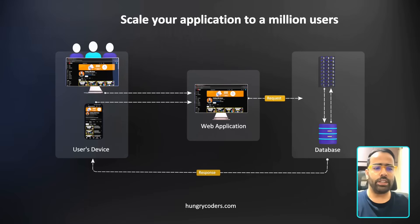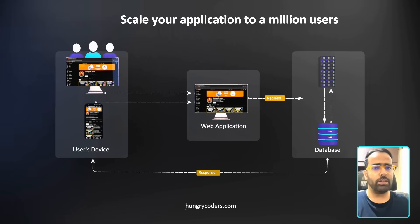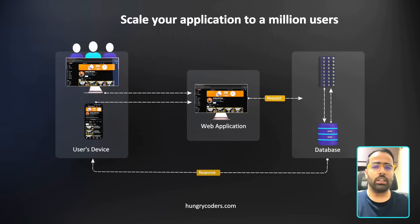The issue starts when traffic is too much — when a lot of users are hitting your application at the same time. Then you have to make changes at the server level, the database level, and the architecture level. So now let's say we want to scale this application because traffic has started coming in.